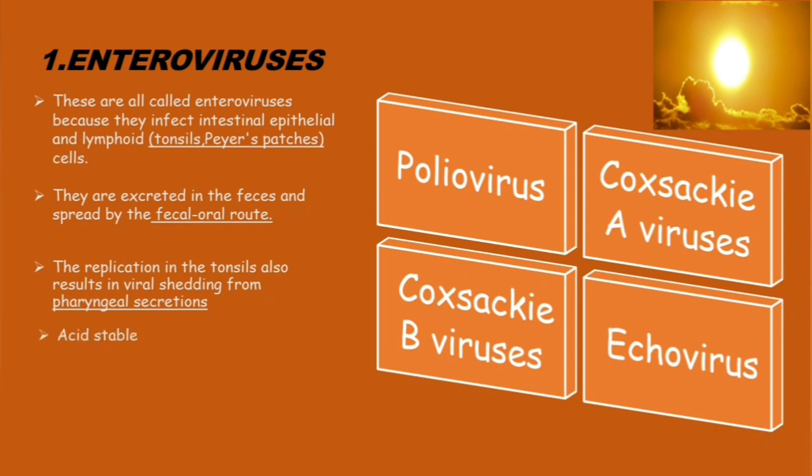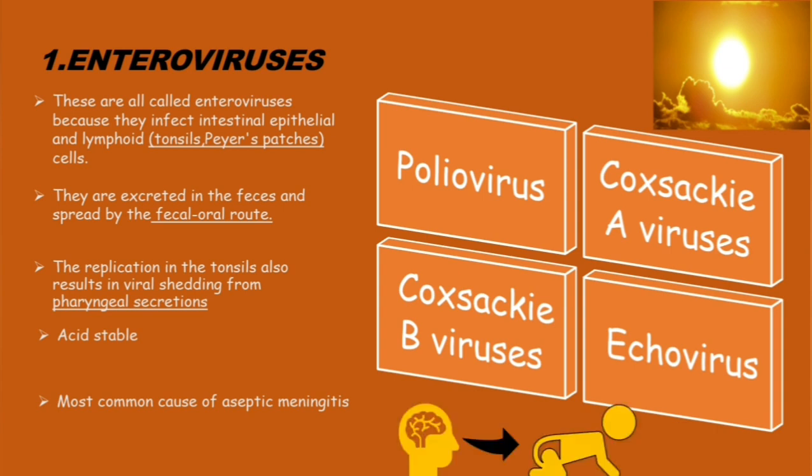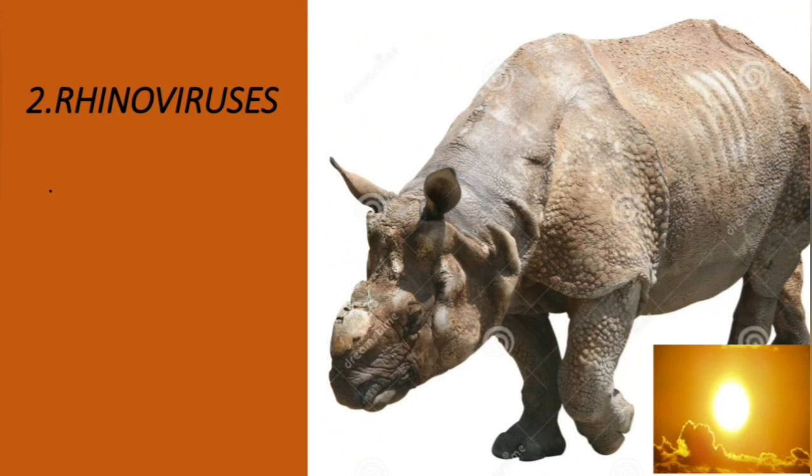Above that, these viruses are acid stable, which means they are not affected by the gastric juices. Enteroviruses are the most common cause of aseptic meningitis, especially in children.